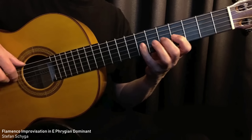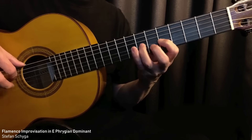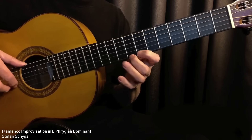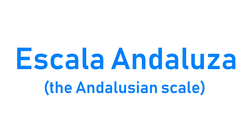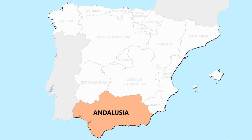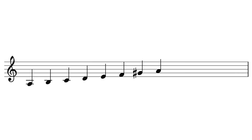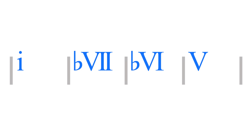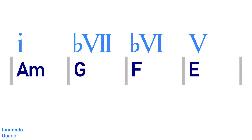Phrygian Dominant is closely associated with Spanish flamenco music, being one of the main scales used in the style. In Spain, Phrygian Dominant is often referred to as Escala Andaluza, or the Andalusian scale — Andalusia being the southern region of Spain where flamenco music originates from. It's interesting how in flamenco music we can really see the modal element of Phrygian Dominant at work. A common chord progression in flamenco music is the Andalusian cadence, and it's actually the chord progression that Queen use for Innuendo's flamenco section.